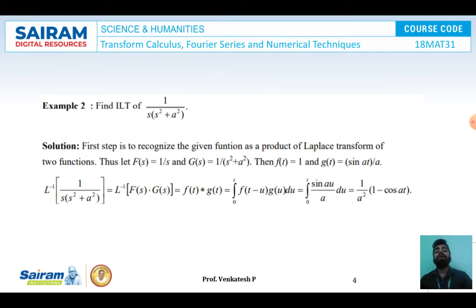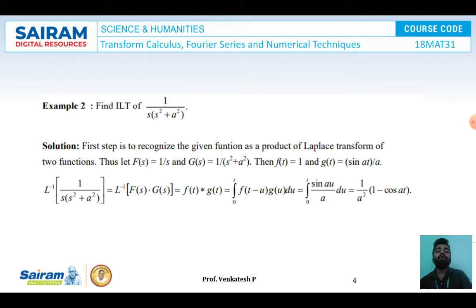Example 2: Find the inverse Laplace Transform of 1/(s·(s² plus a²)) using the convolution theorem. First, we identify f(s) and G(s). We choose f(s) equal to 1/s and g(s) equal to 1/(s² plus a²). Now applying the inverse Laplace Transform to find f(t) and g(t).